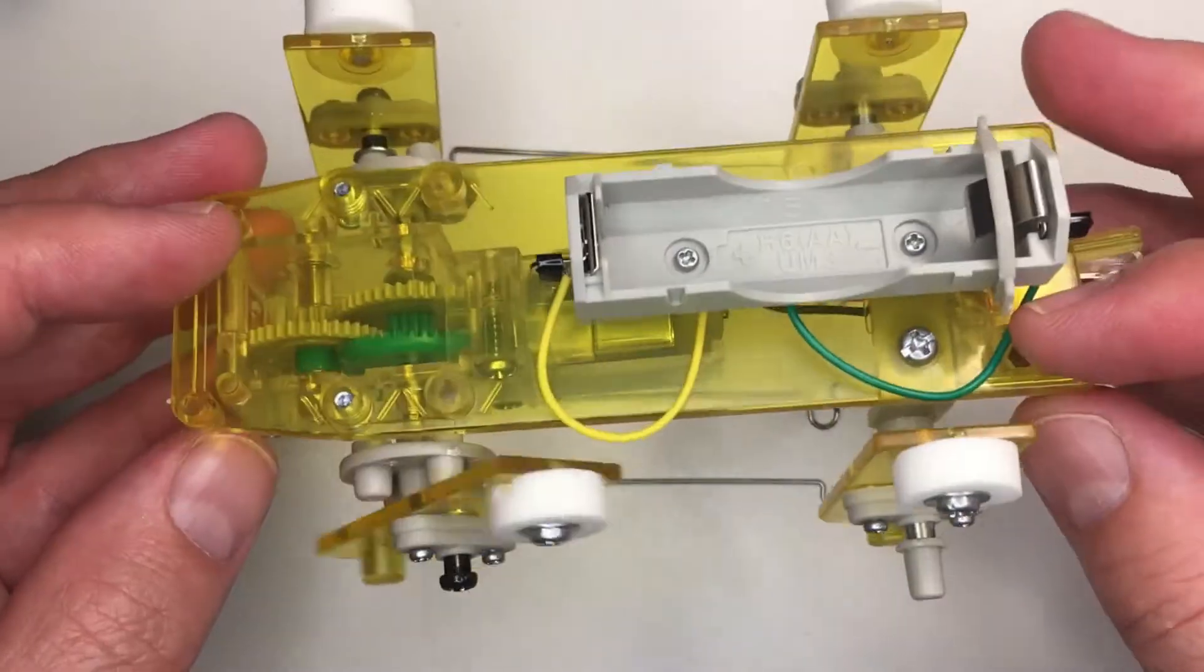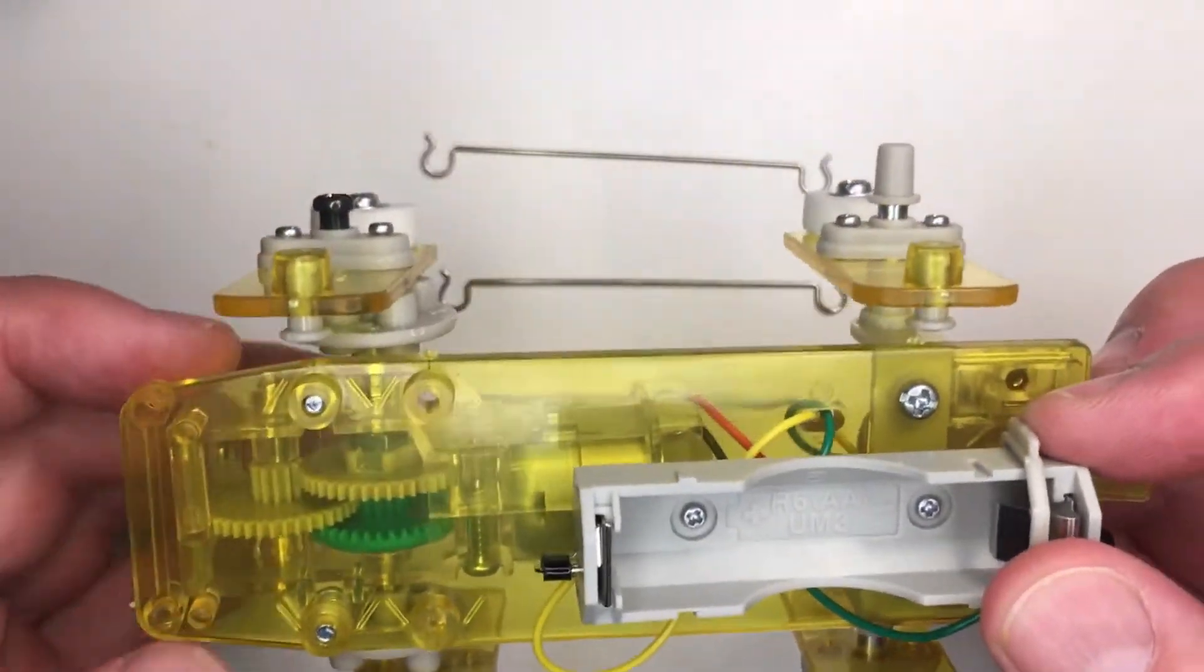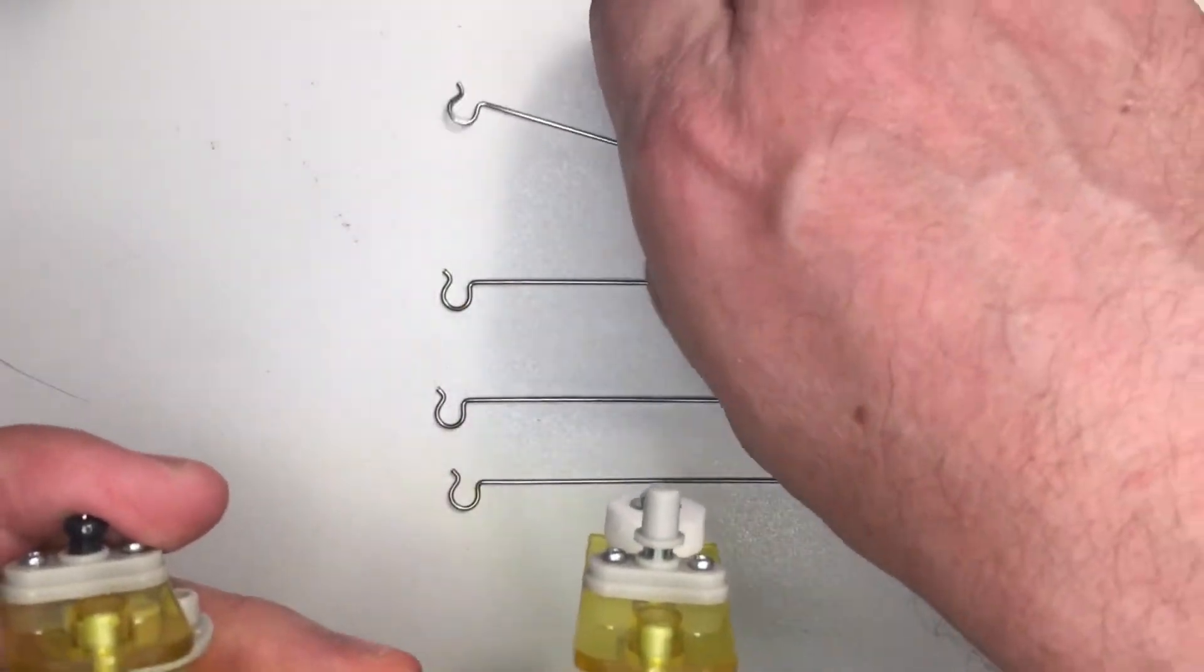So when building the robot, gravity is going to push the feet down. So I want to hold it like that when I'm doing it. And I want to make an X pattern.